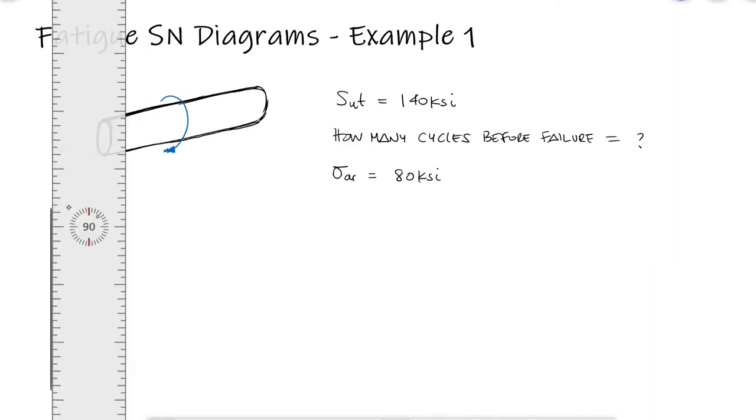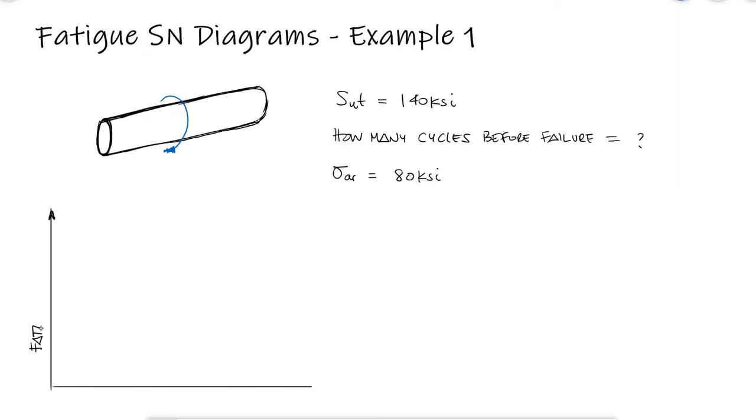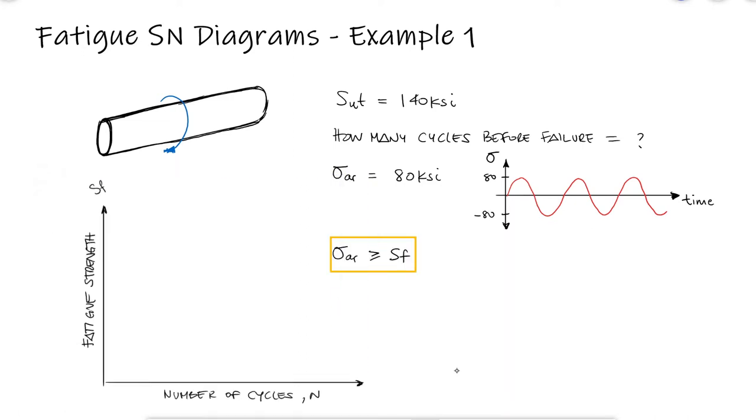We know that we use S-N diagrams to find the fatigue strength of the material as a function of the number of cycles the part is subjected to. The fatigue strength is directly compared to completely reversed stresses like the one given in this example. So we know that the part will fail when this alternating stress reaches or exceeds the fatigue strength of the material.